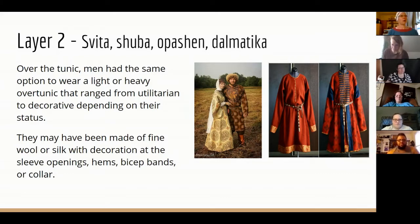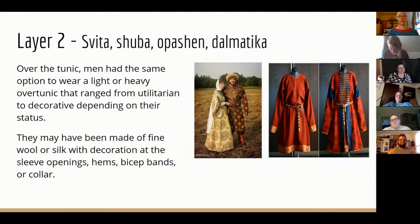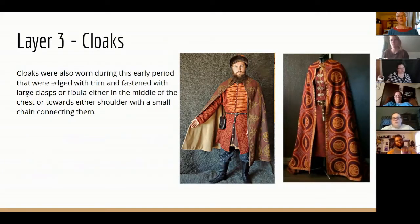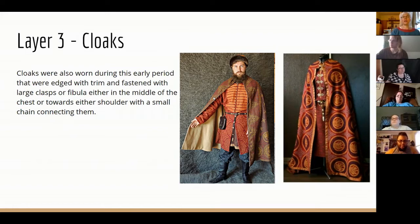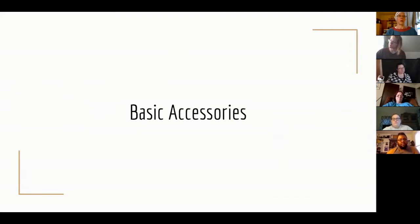The decoration didn't always match — to our modern sensibilities we like everything to match, but it was possible to have one trim on the hem and a different trim at the sleeve openings or collar, depending on what was available. For men's cloaks, the construction is a bit more rectangular. Large clasps or fibulae were used, either in the middle of the chest or toward the shoulder.